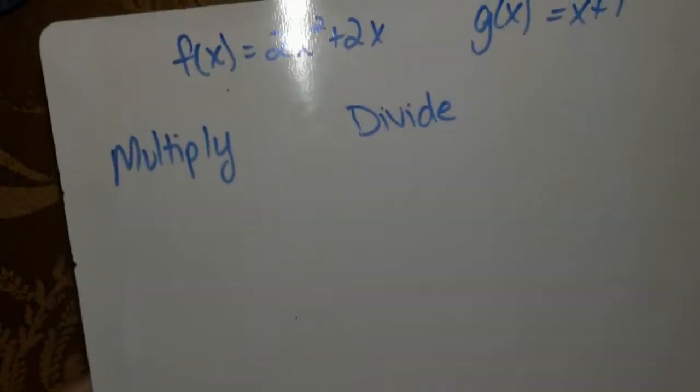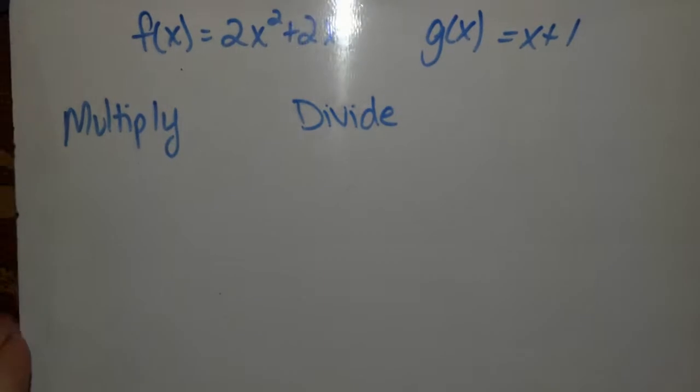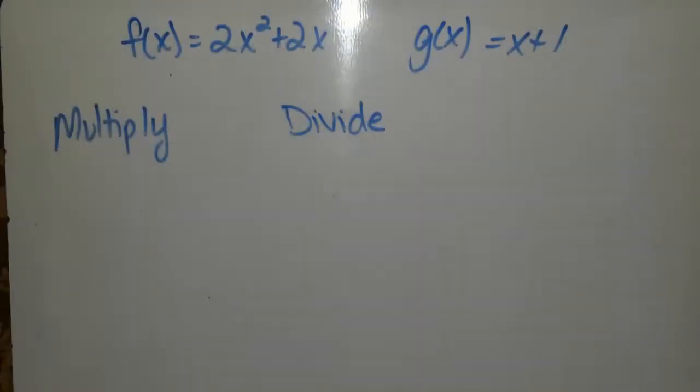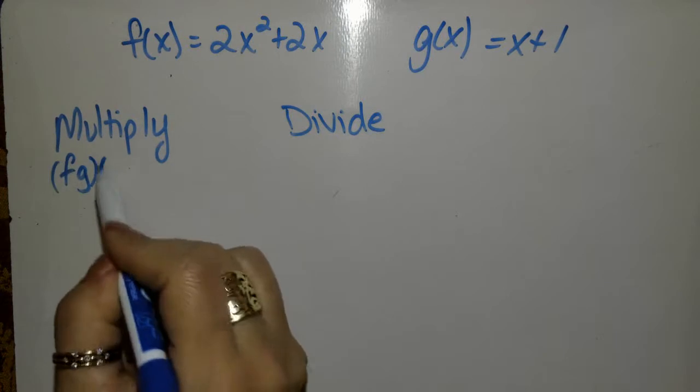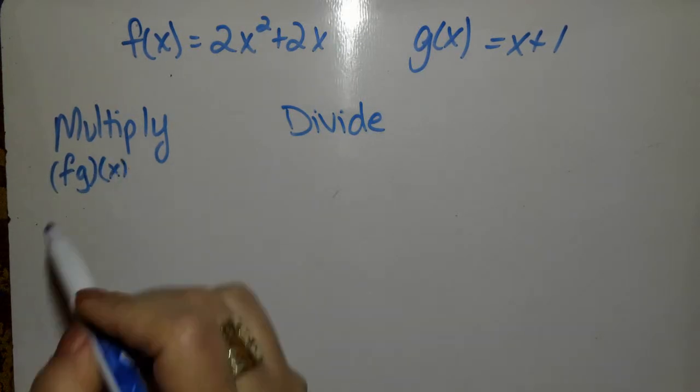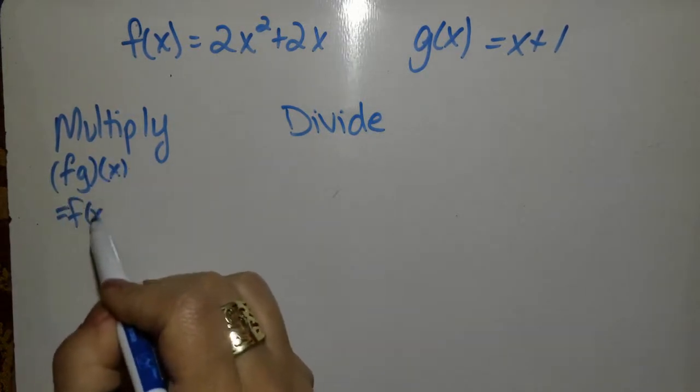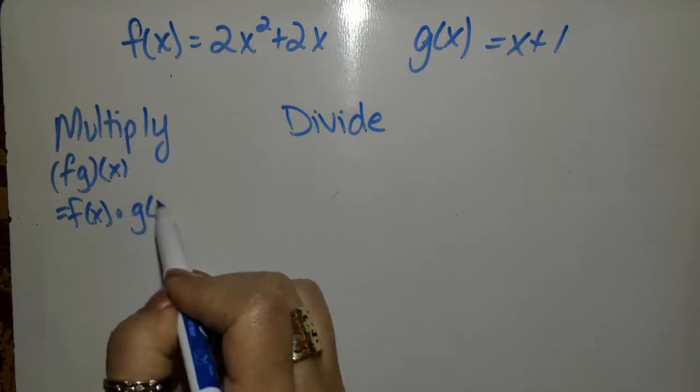and now we're going to talk about multiplying and dividing. So, we have two new functions, f of x and g of x, and so when we multiply, they're going to write this as f times g times x, which you should know as f of x times g of x.